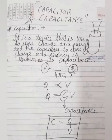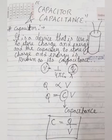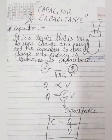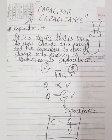Capacitance can be measured by the formula C is equal to Q by V. As we know that V is equal to 1 upon 4 pi epsilon naught times Q by R, so Q is directly proportional to V. If we remove the proportionality sign and place an equal to sign, a constant C comes in. Keeping C as the subject, C is equal to Q by V. This is the expression for capacitance.